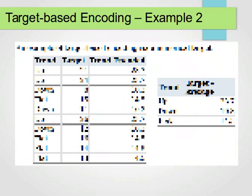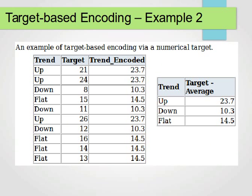The other example is when we replace it by average. Let's assume our target now has a real value. For up, the target here is 21. For up, the target here is 24. For down, target is 8. Flat, target is 15, and so on. We compute the average for each category of the categorical variables. We have up, down, and flat.